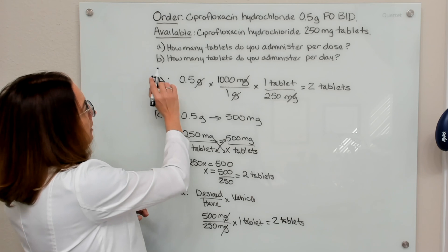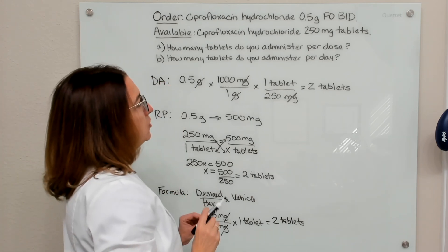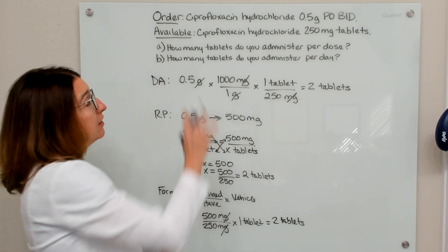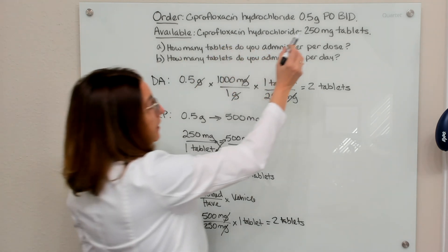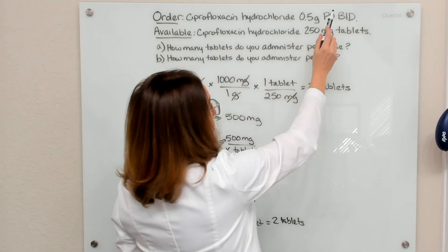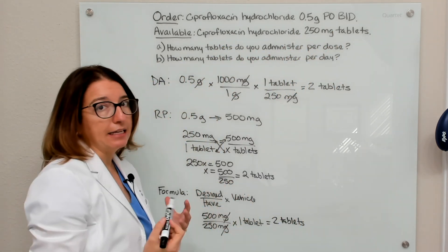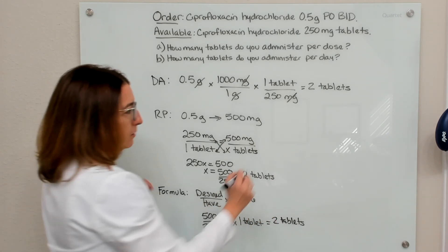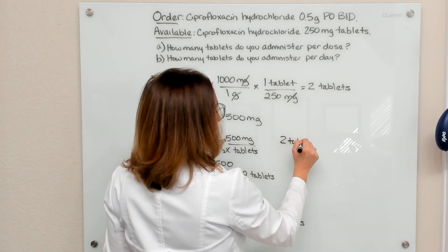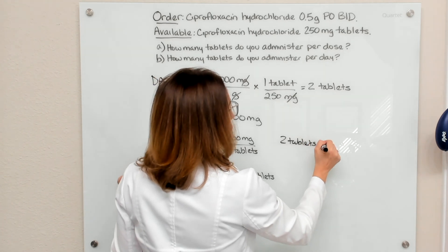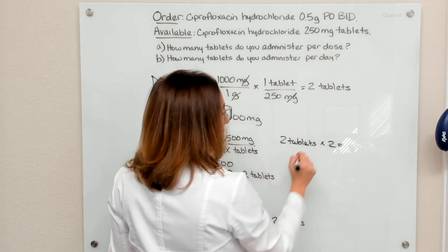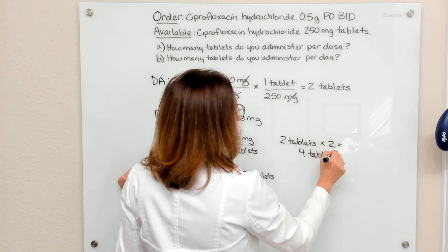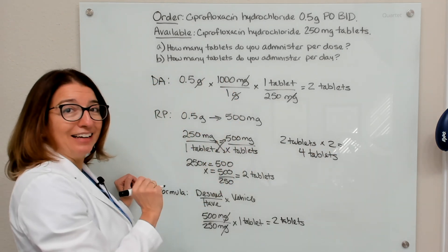What about Part B? Part B asks us, how many tablets do we administer per day? Per the order, we need to give this medication BID, which is twice a day. So if we're giving two tablets per dose and we are giving that two times a day, then we are giving four tablets over the course of the day.